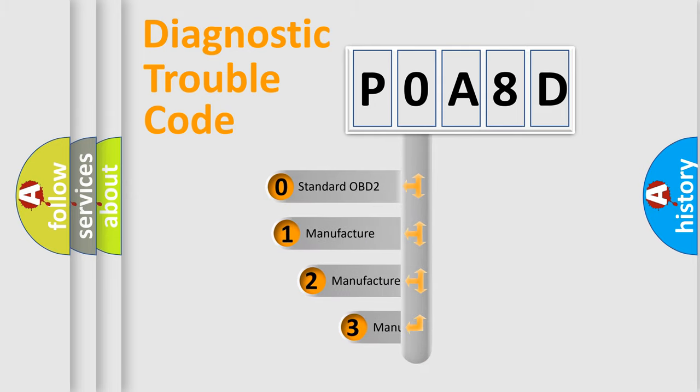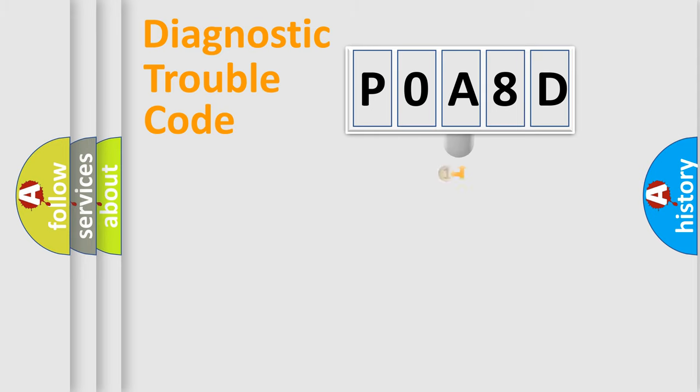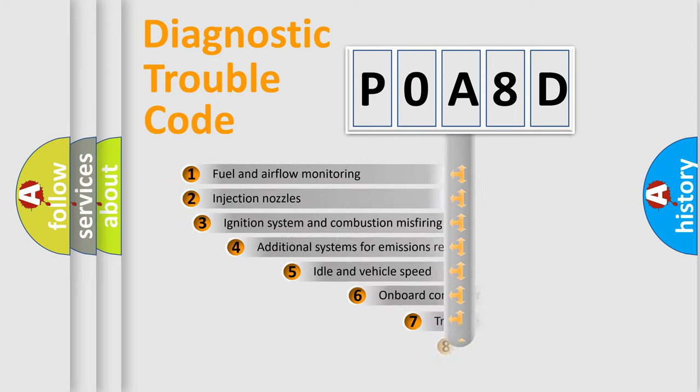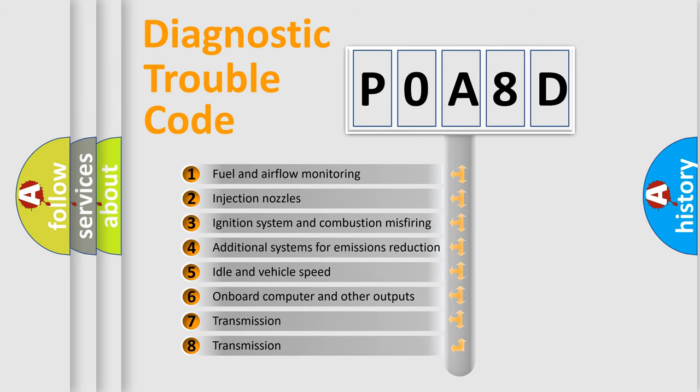If the second character is expressed as zero, it is a standardized error. In the case of numbers 1, 2, or 3, it is a manufacturer-specific error. The third character specifies a subset of errors.